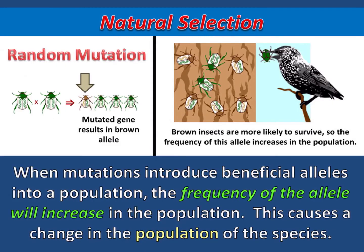When mutations introduce beneficial alleles into a population, the frequency of the allele will increase in the population. This causes a change in the population of the species.